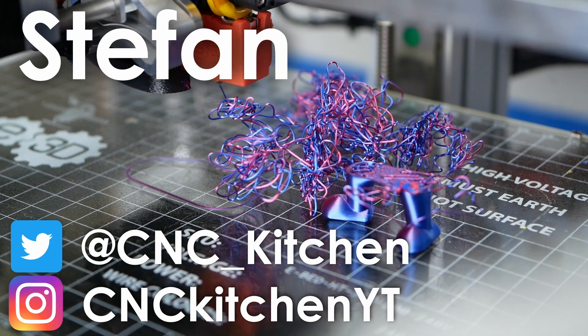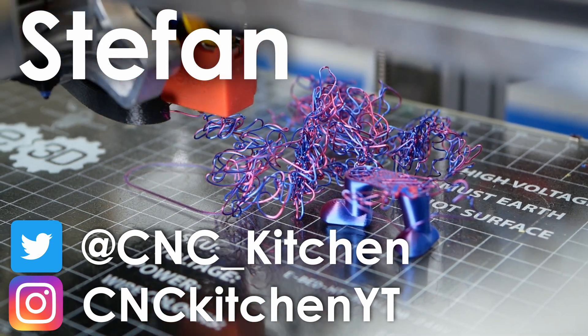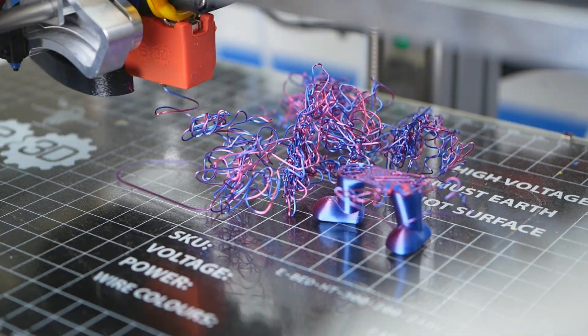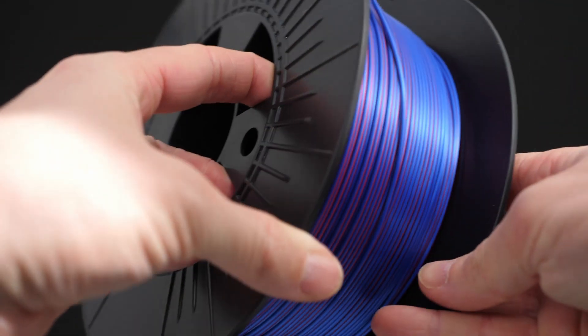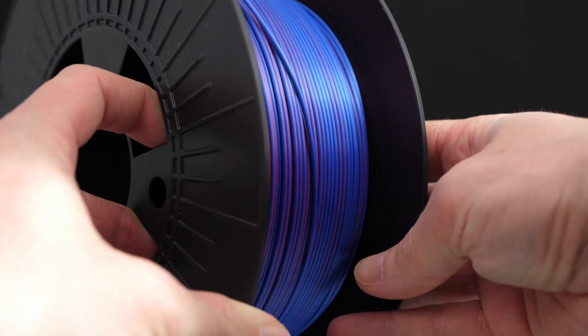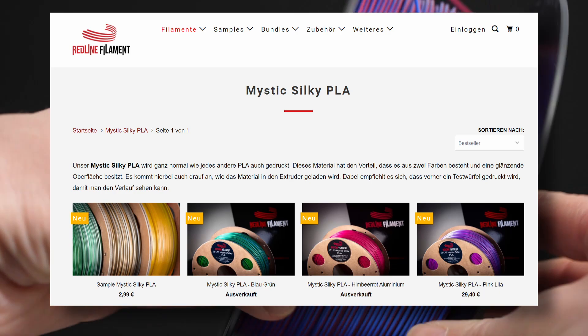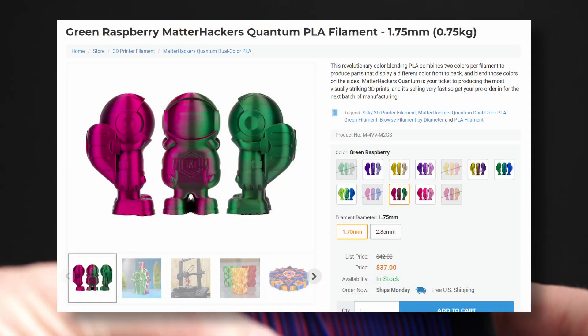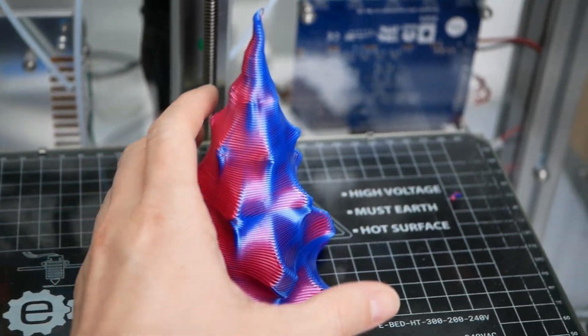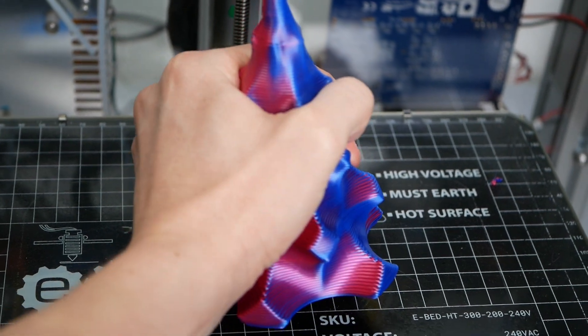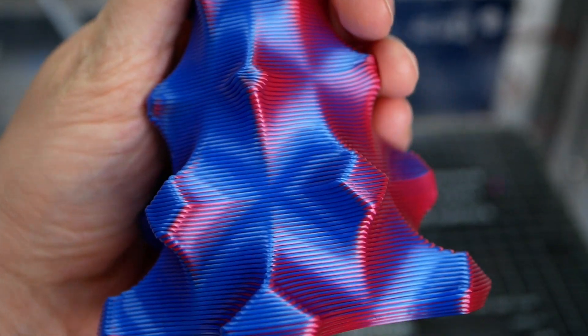Guten Tag everybody, I'm Stefan and welcome to CNC Kitchen! I showed this fantastic-looking dual-color filament in a recent video that has recently popped up at quite some vendors here in Europe and the US. When you print this material, you end up with different colors on your parts depending on the angle and the side you look at it.